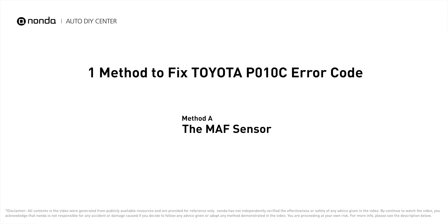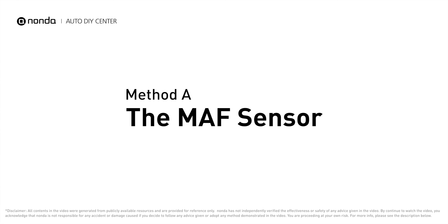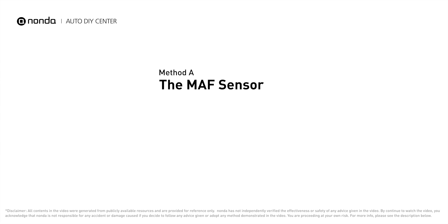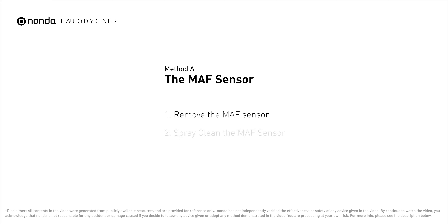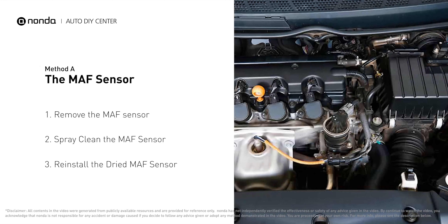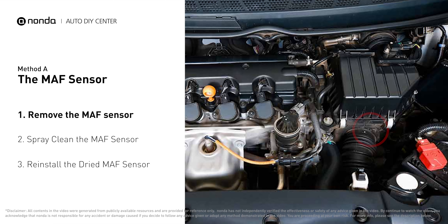Here is one of the most practical solutions to fix Toyota's P0-10C error code. Method A: MAF Sensor. MAF sensors are located between the air filter and the throttle body.